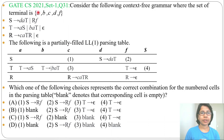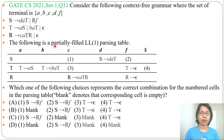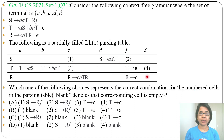Let's solve a previous GATE CS 2021 Set 1 question, question number 31. Consider the following context-free grammar where the set of terminals are a, b, c, d, f. A grammar is given along with a partial LL(1) parsing table. The question asks for the correct combination for cells one, two, three, and four in the parsing table, and four options are provided.